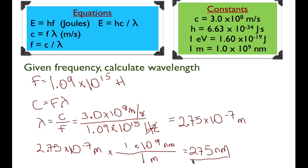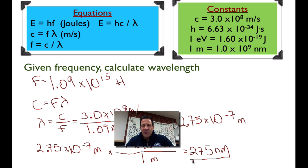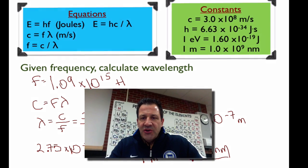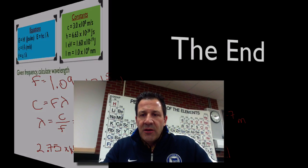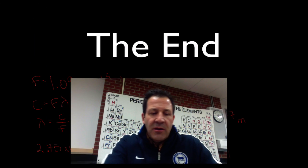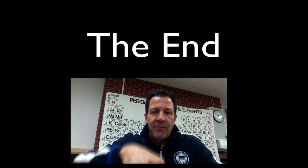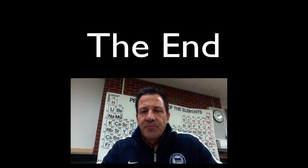So we started with electron volts, converted to joules, calculated the frequency, then calculated the wavelength in meters, and converted to nanometers. I hope that's helpful. If you have any comments or questions, please leave them in the comment section below. Thank you very much.